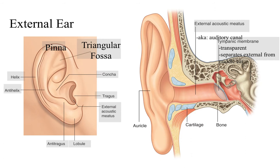Beginning with the external ear, which is the part that's visible, this picture on the left shows all of the different parts you should be familiar with. It's important to know these parts not just for this class, but because you'll be looking at and assessing them when you do your physical exam lab as well. Make sure you're familiar with all of the terms and parts outlined in gray here.